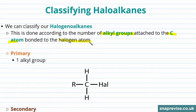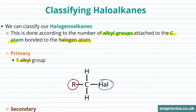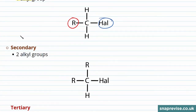Take a look at our primary haloalkanes first of all. Our primary haloalkanes will have only one alkyl group attached to the carbon atom that's bonded to the halogen. Here we have a representation of our primary haloalkanes where R represents the alkyl group and 'hal' represents any of our halogen atoms. In our secondary haloalkanes we have two alkyl groups attached to the carbon that is bonded to our halogen — you can see we have one, two of those alkyl groups.